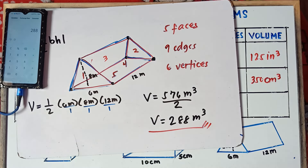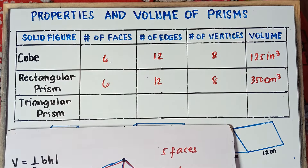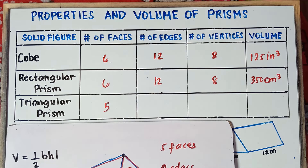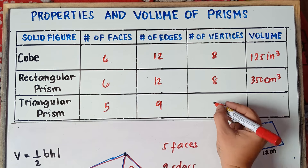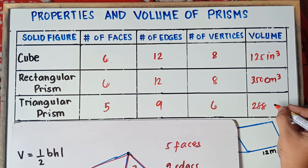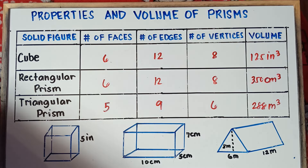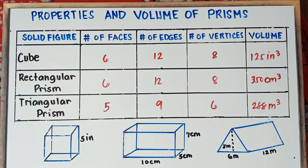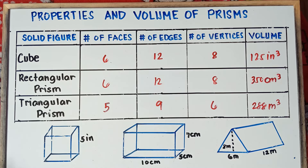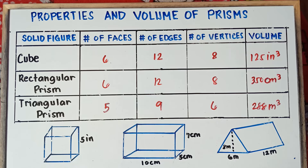That's it class, you're all set. So for the triangular prism: five faces, nine edges, six vertices, and volume of 288 cubic meters. I hope you learned something new today. If you have questions, put them in the comment section below. If you like this video, don't forget to like, share, and subscribe — share it with your friends and classmates so we can help more students. This is Teacher MJ. Have a great day class, goodbye for now!